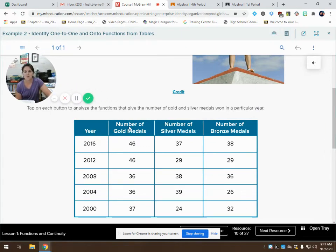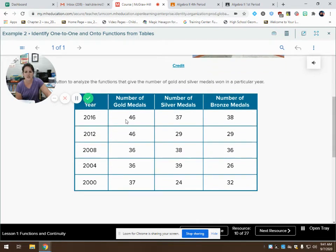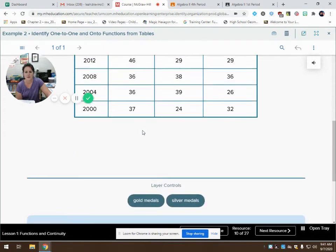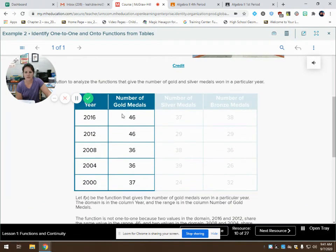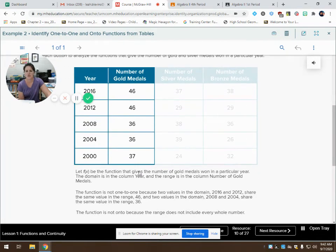It says tap on each button to analyze the functions that give the number of gold and silver medals won in a particular year. Let's look at gold medals. Here's my number of gold medals. In 2016, we won 46. In 2012, 46, 2008, 36, 2004, 36, and 2000, 37.